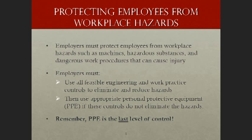As we wrap up part one of PPE and Assessments: employers must protect employees from workplace hazards such as machines, hazardous substances, and dangerous work practices. Employers must use all feasible engineering and work practice controls first to eliminate, substitute, or reduce hazards — and only then can they ask employees to wear personal protective equipment. Remember, PPE is the last level of control measure. The hierarchy is: engineering, administrative and work practices, and then PPE.